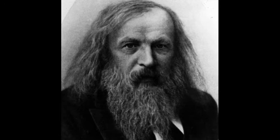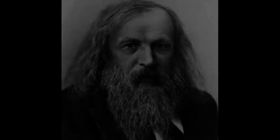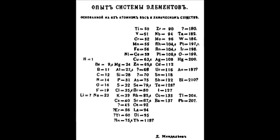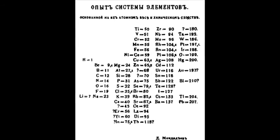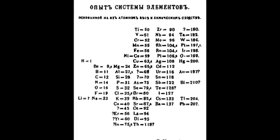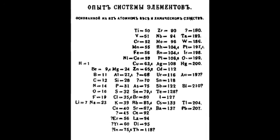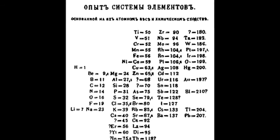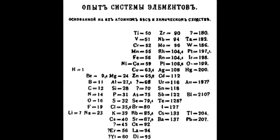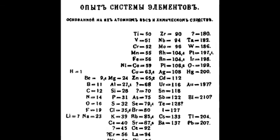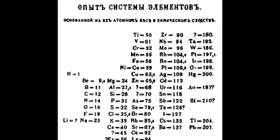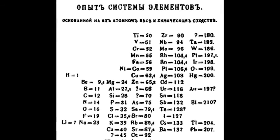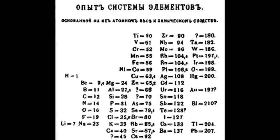Mendeleev realised that the features of the elements repeated in a predictable pattern based on their atomic weight. While this led to there being some gaps or spaces in periods where he believed an element should exist, he was able to calculate the missing element's atomic mass and predict its properties. His predictions later turned out to be correct when missing elements such as gallium were discovered within his lifetime.